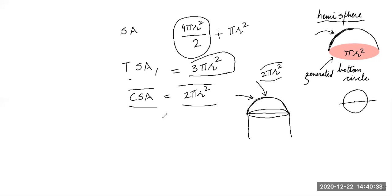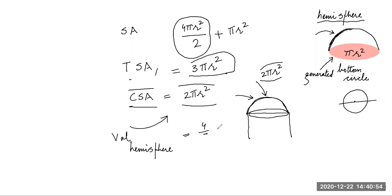The volume of a hemisphere: since the new cut surface does not add volume, the volume is simply half the volume of a sphere. So volume of hemisphere = (4/3 πr³) ÷ 2 = 2/3 πr³.